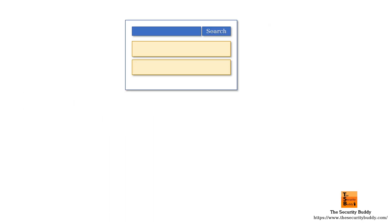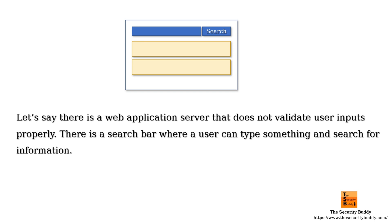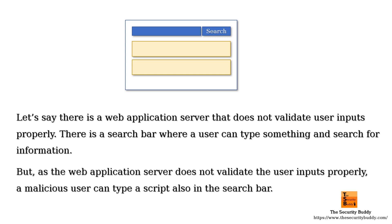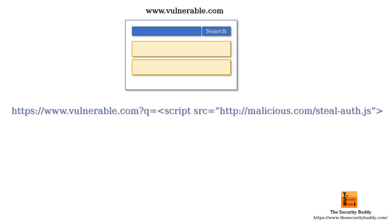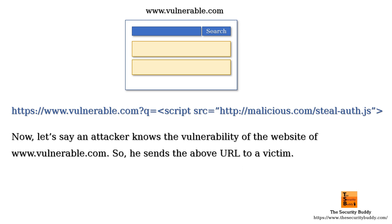Let's say there is a web application server that does not validate user inputs properly. There is a search bar where a user can type something and search for information. But as the web application server does not validate user inputs properly, a malicious user can type a script in the search bar. Now, let's say an attacker knows the vulnerability on the website of www.vulnerable.com, so he sends the following URL to a victim.